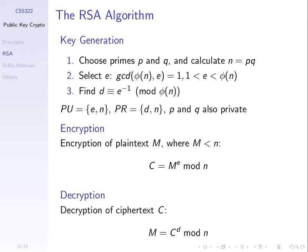Decryption is: take the ciphertext, raise it to some power d and mod by the same n, and we need to get the same m back. The key generation steps are chosen such that we will get the same m back no matter what the value of the original plaintext, and also so that attacks will not be possible in practice. That's why the key generation steps are these three steps.